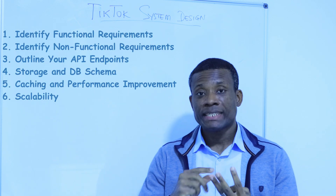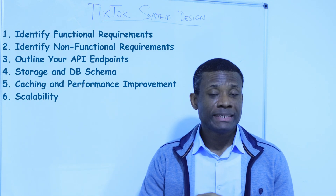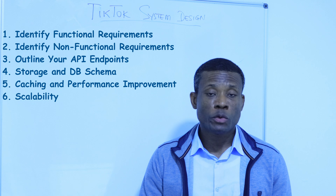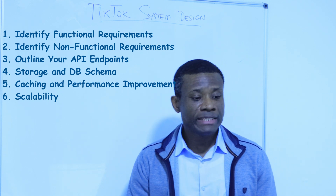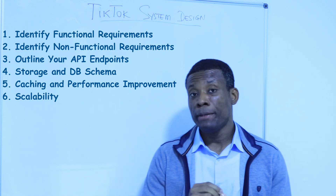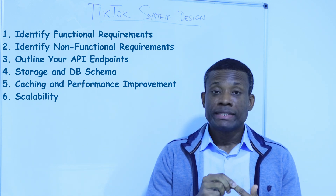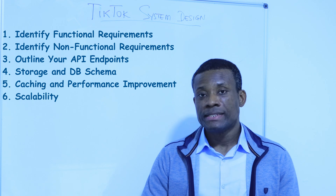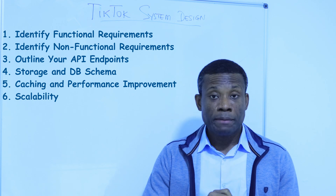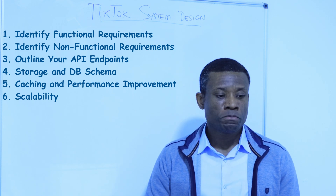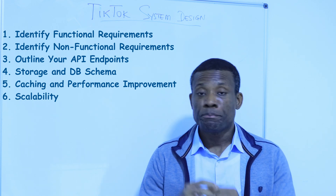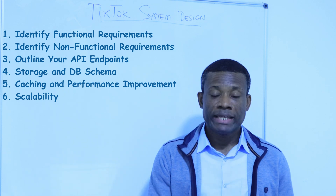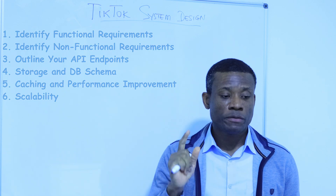The first step is identify functional requirements. Second, identify non-functional requirements. Third, identify your API endpoints. Fourth, identify your database and your database schema. Then caching, pre-caching and performance. Then scaling. There are six of them.